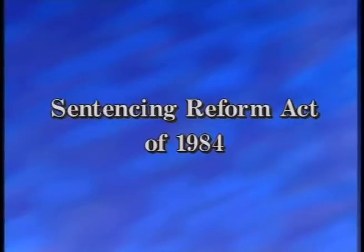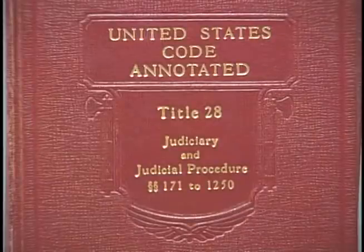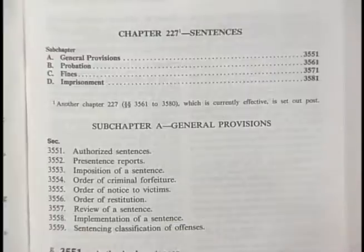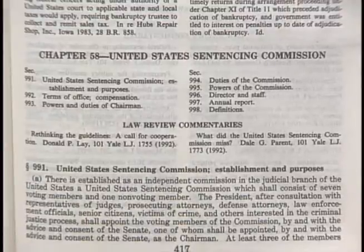The Sentencing Reform Act, which we'll also refer to as the Act from now on, sets forth contemporary sentencing policy. The Act is codified largely in Titles 18 and 28 of the United States Code. Title 18, concerned with crimes and criminal procedure, contains provisions of the Act relating to sentences. Title 28, concerned with the judiciary and judicial procedure, contains provisions relating to the Sentencing Commission. Now Judge Taylor will explain the major components of the Act.